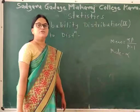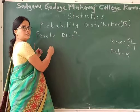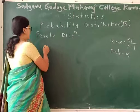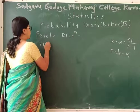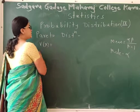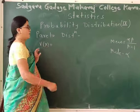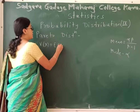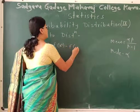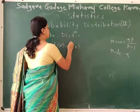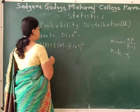Now let me find the variance of Pareto distribution. By using the formula for variance, the formula is: variance equals expectation of X squared minus expectation of X, that whole quantity squared.